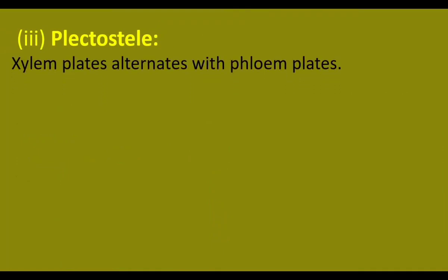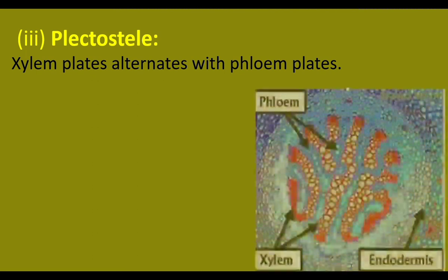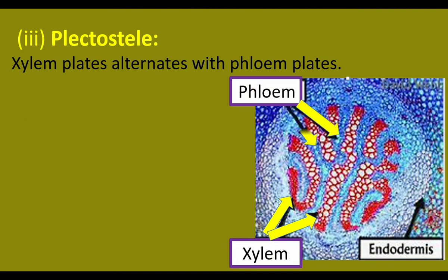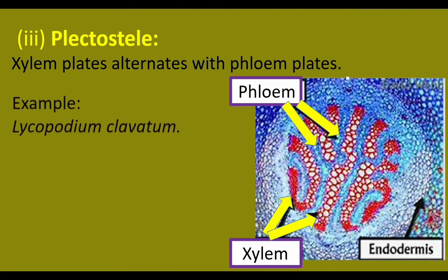Plectostele: xylem plates alternate with phloem plates. Xylem is arranged in the form of plates. The red-colored xylem plates alternate with phloem plates. Example: Lycopodium clavatum.